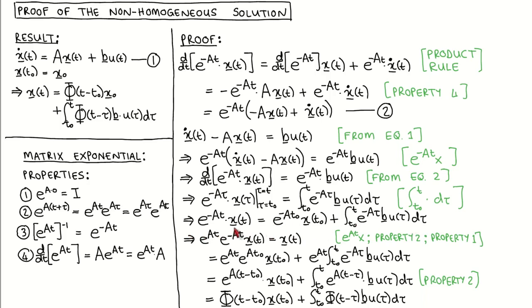We want just the state vector x on the left-hand side. To do this, we left multiply with the matrix exponential of At and use property 2 and then property 1 to write this as the identity matrix, which multiplied with x is simply x.